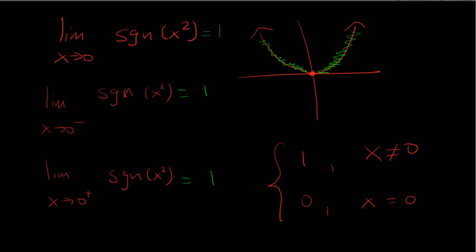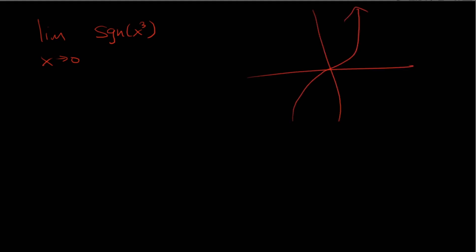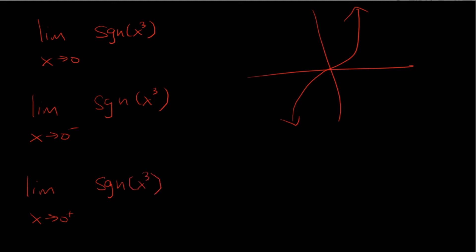Now what happens if the left-hand and the right-hand limits are not the same? For this example, we'll be looking at sign of x cubed. It's going to look something like this. We're going to be considering the left-hand and the right-hand again. To the left of 0, over here, it's negative, so the sign is going to be negative 1. Because the left-hand and the right-hand limits don't agree, we say that the limit does not exist.